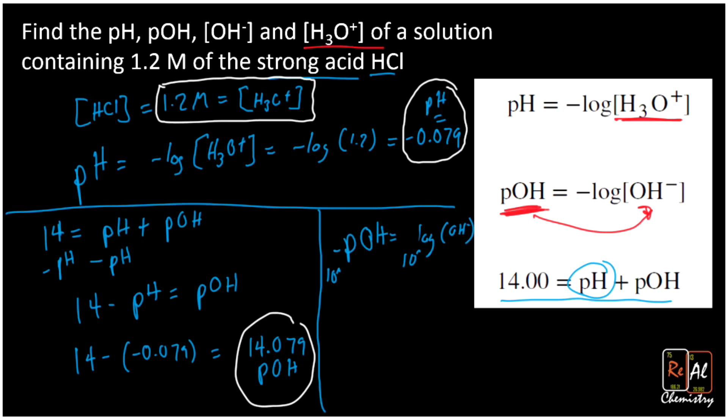When I do that, my 10 raised to the log cancels out, and I just am left with the OH-. So I get 10 raised to the negative pOH equals my OH- concentration. A lot of people will just commit that equation that we just wrote there to memory because it seems a little easier. So we do 10 raised to the minus 14.079, and that's going to give us 8.34 times 10 to the minus 15 molar for my OH- concentration.